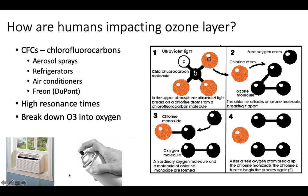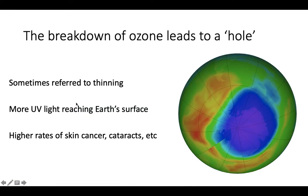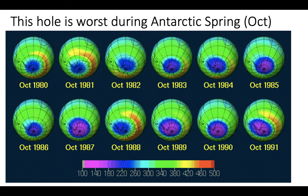As this breakdown continues, the ozone layer will start to degrade and eventually leads to the development of what we now call a hole in the ozone layer — sometimes referred to as thinning. This hole, usually located around Antarctica, allows more UV light to reach the Earth's surface, leading to higher rates of skin cancer, cataracts, and lower primary productivity. The hole is worst during Antarctic spring, which because it's in the southern hemisphere, occurs in October — their seasons are reversed. You can see all these dates are in October, when the hole in the ozone layer is at its worst.